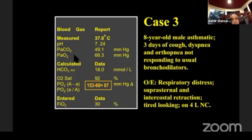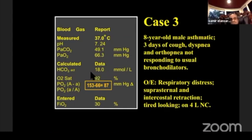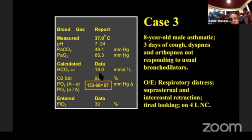Case 3: Acidotic pH, CO2 increased, bicarb decreased — respiratory acidosis in opposite direction to pH. CO2 increased by 9 mmHg. Compensation: multiply 9 by 0.1 equals about 1 mmHg bicarb change expected for acute respiratory. The bicarb dropped too much, so the patient is suffering from respiratory acidosis combined with metabolic acidosis.